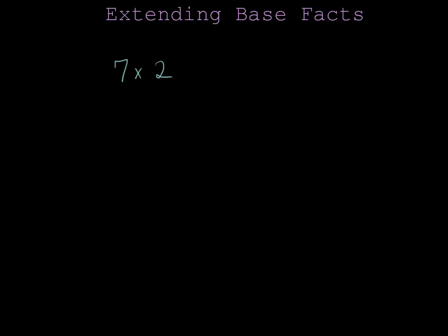So let's start off with a basic multiplication fact, 7 times 2. One way of thinking about this is that I could have 7 groups of 2, which would make 14. So let me go ahead and write in the answer here, 7 groups of 2 equals 14.